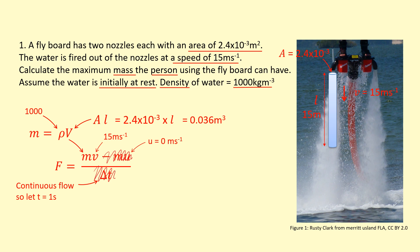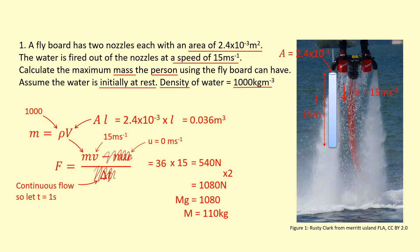With the volume and density known, we find the mass of water fired downwards: 36 kg per second. Multiplying by 15 m/s gives a force of 540 N per nozzle. Since there are two nozzles, the total upward force is 1080 N. Setting this equal to mg (where m is the mass of the person) and dividing both sides by g gives a maximum mass of approximately 110 kg.